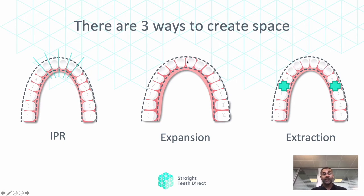This expansion approach is how Straight Teeth Direct aligners work. Another way is through extraction, where a dentist extracts some teeth to create space for straightening. As mentioned, there are many different ways and depending on your case, different solutions might be required.